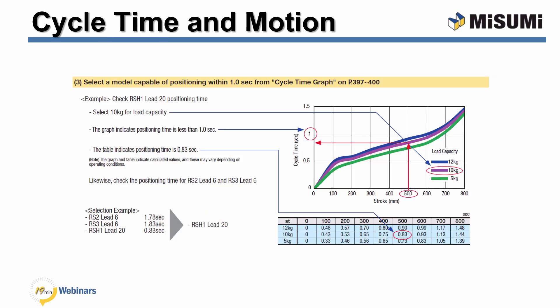These cycle time charts can be very useful — they give you the cycle time requirements for the application. In this example, we look at what it takes to move a 10 kg load 500 mm within one second. With this cycle time graph, it shows that we can take an RS H with a 20 mm ball screw and make a horizontal move of 500 mm in less than 0.83 seconds. A full set of these charts for each robot is included in our catalog and on our website.